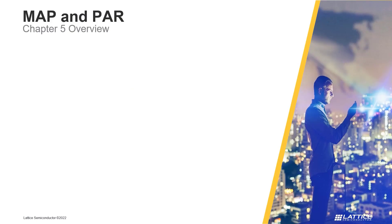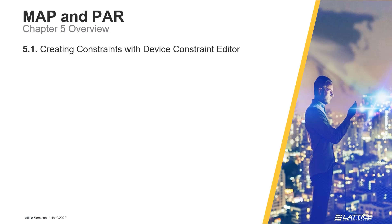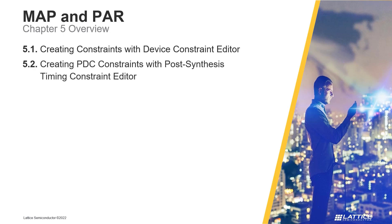Chapter 5 consists of seven sections. In the first section, Creating Constraints with Device Constraint Editor, we will introduce Radiant's Device Constraint Editor and how it can be used to create physical constraints for a project's device. In section 2, Creating PTC Constraints with Post Synthesis Timing Constraint Editor, Radiant's Post Synthesis Timing Constraint Editor is introduced and how it can be used to create timing constraints after synthesis. In section 3, Using Physical Designer, we will discuss Radiant's Physical Designer and what it can be used for.